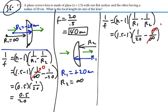1 over infinity is 0, and we have 0.5 times 1 over 20. So the focal length will be equal to 20 divided by 0.5 or 40 centimeters.